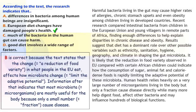B is correct because the text states that the change — that is, the reduction of food variety in what people in the EU eat — affects how microbiota change, that is, limits the adaptive potential. Information after that indicates that most microbiota, or microorganisms, are mostly useful for the body because only a small number — that is, a fraction — cause disease.